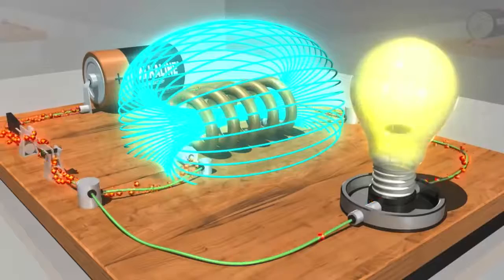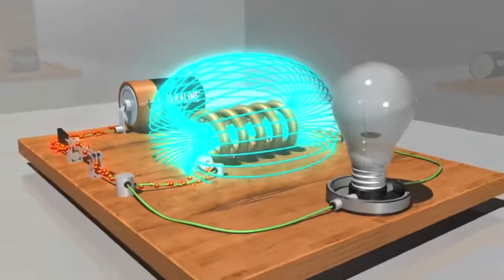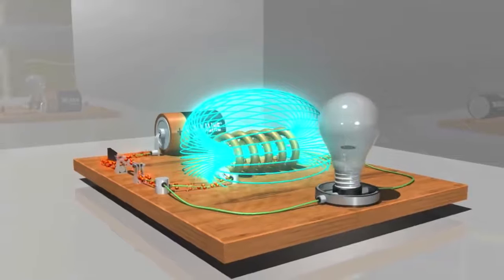Once the magnetic field around the inductor reaches its maximum field, the back EMF fades, and the current now favors the path through the inductor because the bulb creates some resistance to the current.